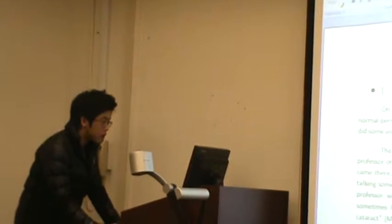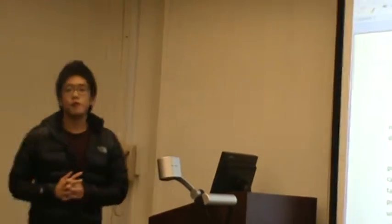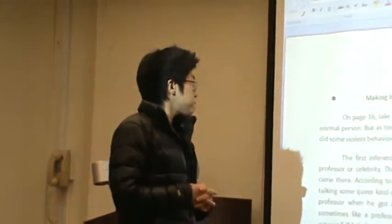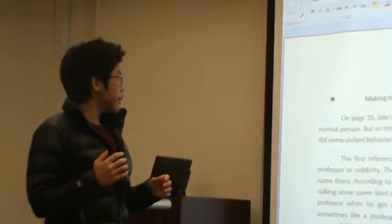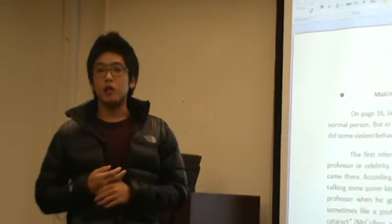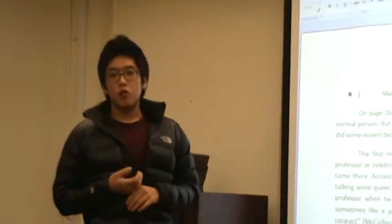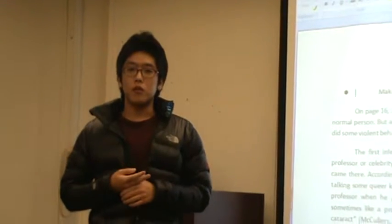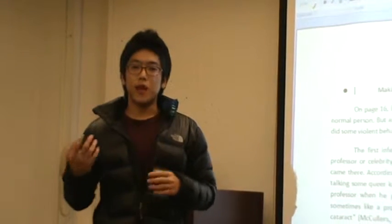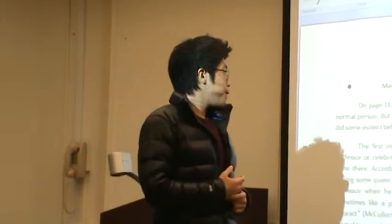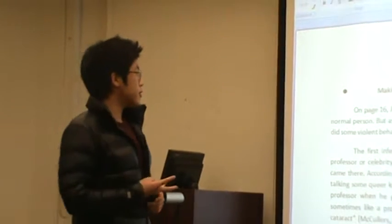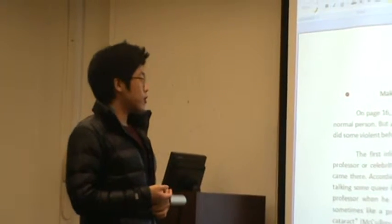The second work is about making inferences in 'The Heart is a Lonely Hunter.' I chose pages 16 and 17 about Jack Bones. There are three paragraphs about Jack Bones, about him coming into the village that John Singer did. I made three inferences about Jack Bones.